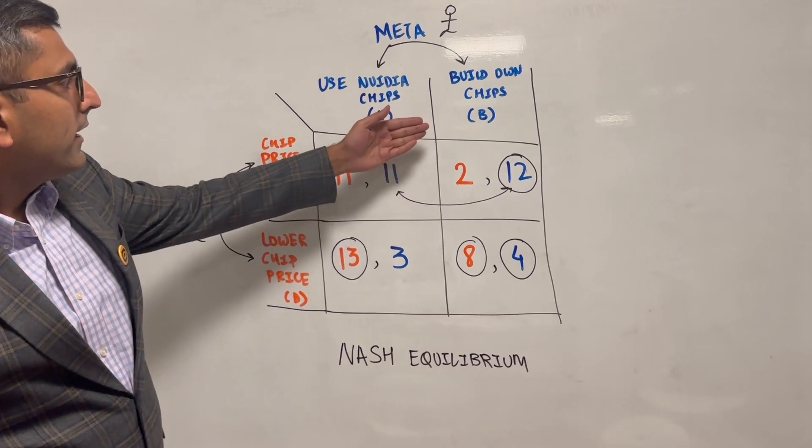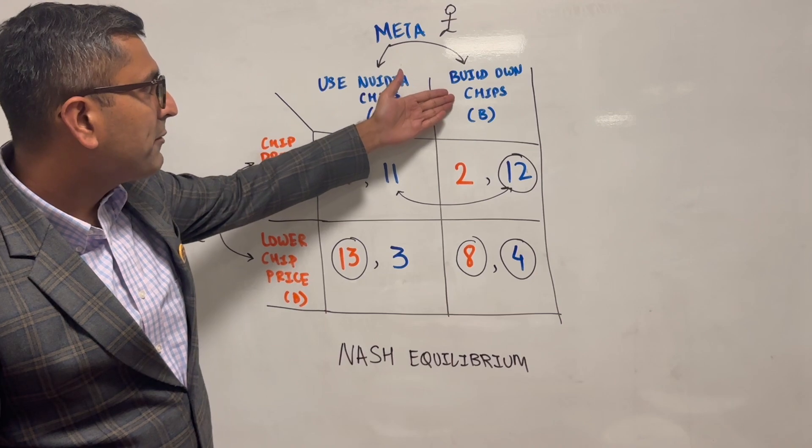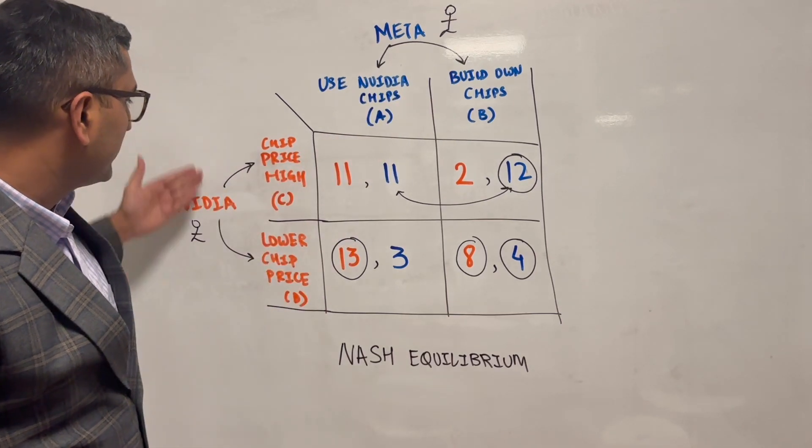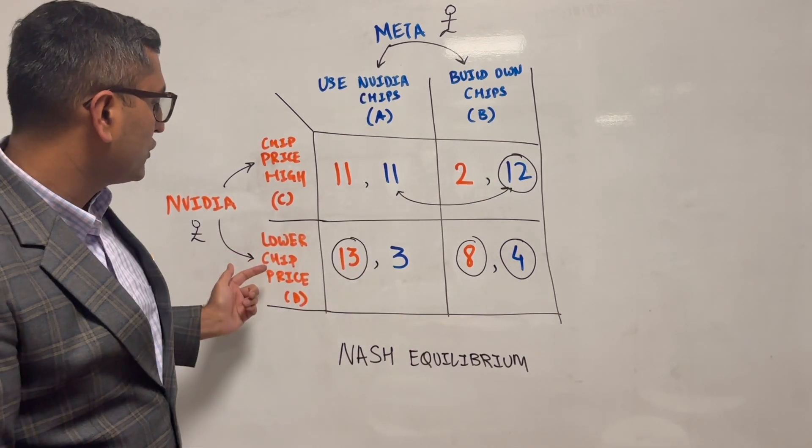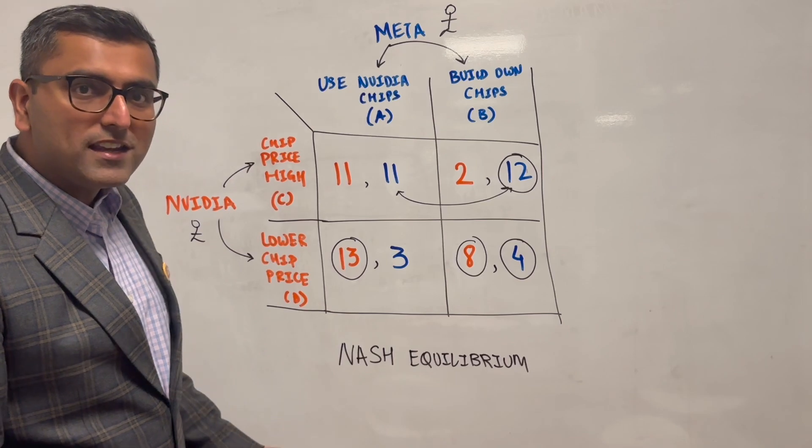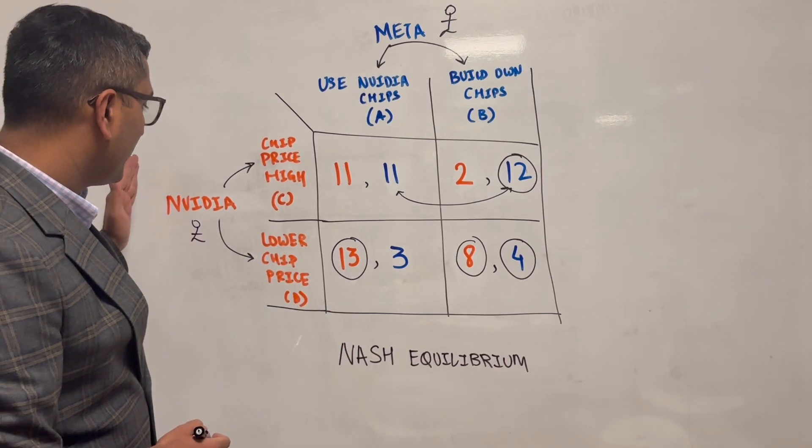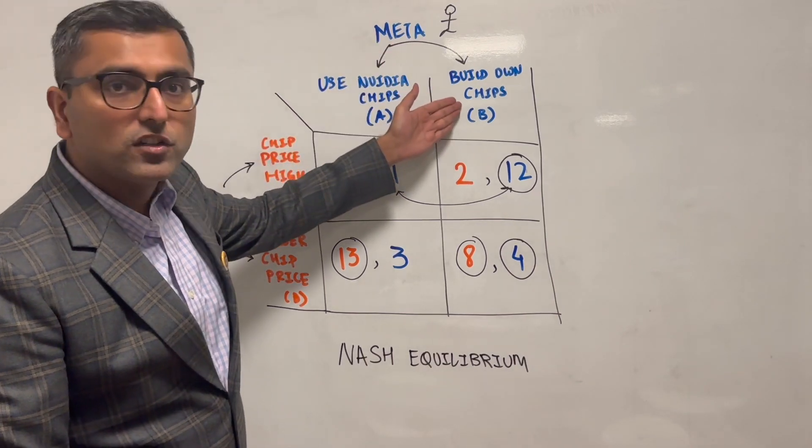So Meta also, in this case, has a dominant strategy. It's going to be like, I'm going to go with B no matter what Nvidia decides. If it's choice C, I'm going to go with B. If it's choice D, I'm going to go with B. So you see, both of them have a dominant strategy, meaning Nvidia should always pick choice D and Meta should always pick choice B.